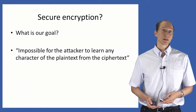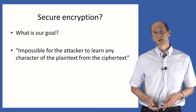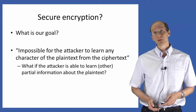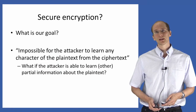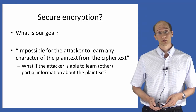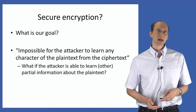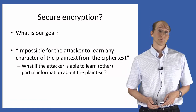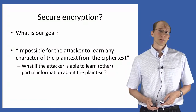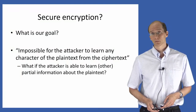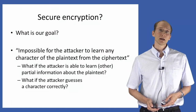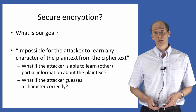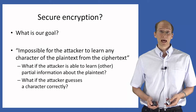We can solve that problem with the following definition: say a scheme is secure if it is impossible for the attacker to learn any character of the plaintext. This is a step in the right direction, but it ignores the possibility that the attacker might learn other information about the plaintext. For example, what if I encrypt someone's salary and the attacker can't figure out any digit, but can tell whether or not they make more than $60,000? That would satisfy this definition, but we really wouldn't want to consider such a scheme secure. Furthermore, it's not entirely clear what it means to learn a character — what if an attacker is able to guess a character correctly? It shouldn't count, but how do we rule that out?